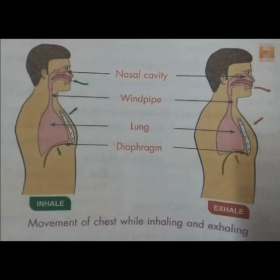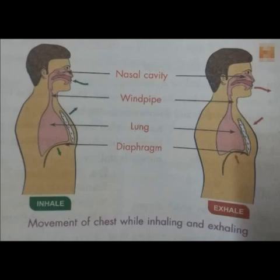When we inhale, the diaphragm contracts — meaning it squeezes, moves downwards, and becomes flat — and the intercostal muscles relax and push the ribcage outwards. This creates space in the lungs and air rushes in. During exhalation, the diaphragm relaxes, reduces the space, and the air is expelled from the lungs.